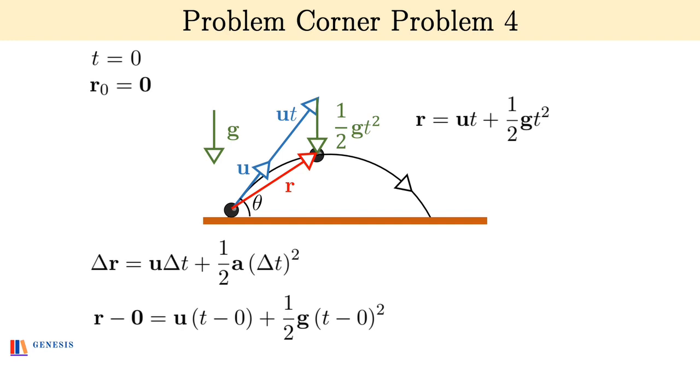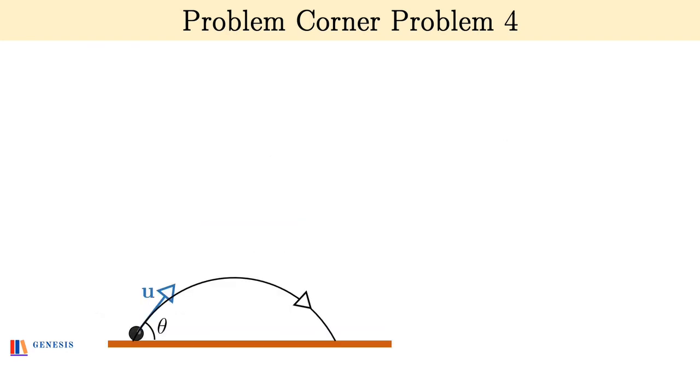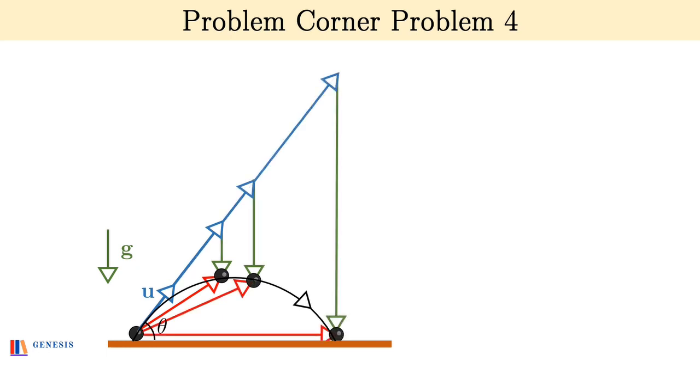Now as the stone moves in its parabolic path, the vector triangle changes as follows. Now look at the final vector triangle when the displacement is r vector whose magnitude is the range and the time is capital T which is the time of flight.